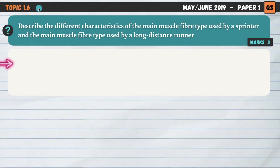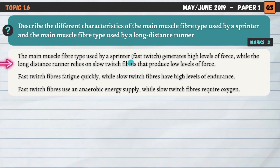Question number three, also on topic 1.6, worth three marks. Describe the main characteristics of the main muscle fibre used by a sprinter and the main muscle fibre used by a long distance runner. The main muscle fibre type used by a sprinter is fast twitch, and the one used by a long distance runner is slow twitch. We need to make three distinct points, relating each characteristic to both athletes. Fast twitch generates high levels of force, while slow twitch fibres produce low levels of force — that's one mark.